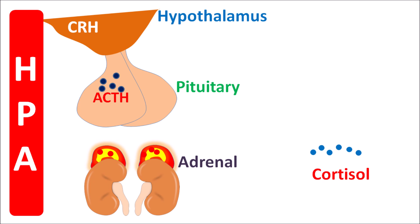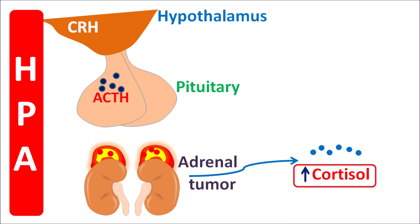But sometimes cortisol levels are excessively increased, mainly due to three reasons. The first is adrenal tumors, which produce more cortisol — in patients with adrenal tumors we can observe increased levels of cortisol. The second reason is pituitary tumors: a pituitary gland tumor results in increased levels of ACTH, so ACTH is more released, which acts on the adrenal gland to release more cortisol.